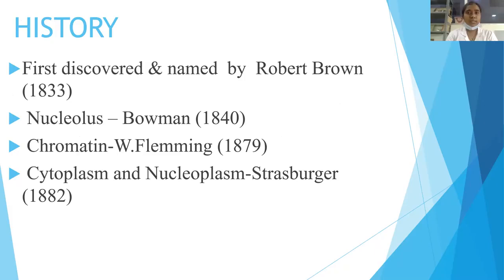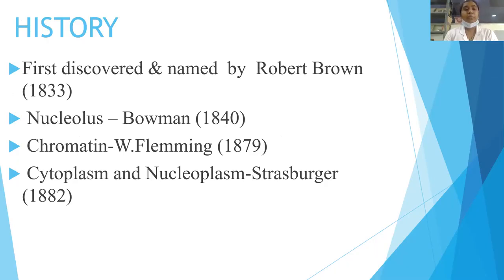Regarding history: the nucleus was first discovered and named by Robert Brown in 1833, and the nucleolus was first discovered and named by Baumann in 1840. Chromosome was named by W.W. Fleming in 1879, and cytoplasm and nucleoplasm were named by Strasburger in 1882.